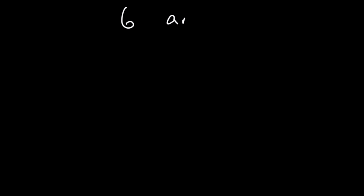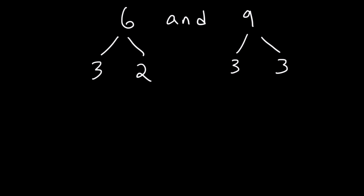Now how can we get the same answer using prime factorization? The factors of 6 are 3 and 2, and factors of 9 are 3 and 3. Only 6 contains a 2, so our least common multiple has to include at least one 2.